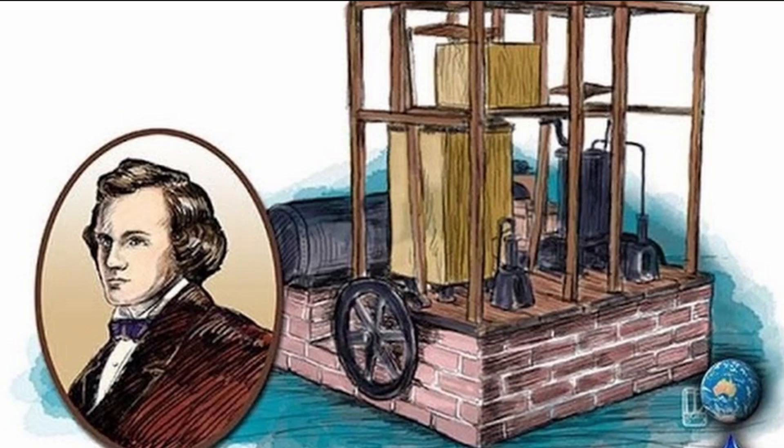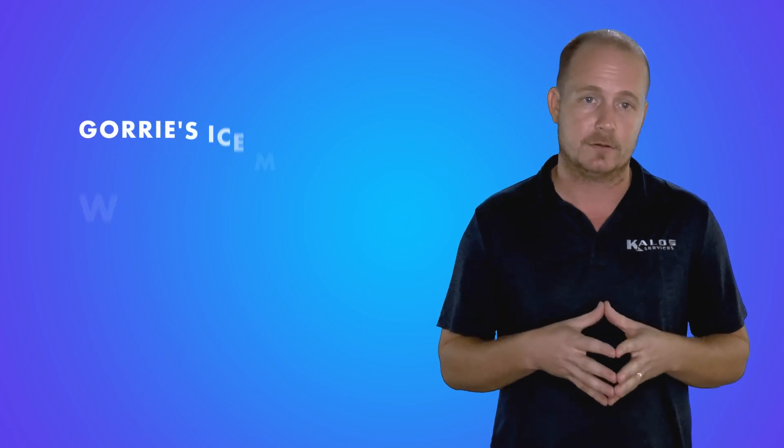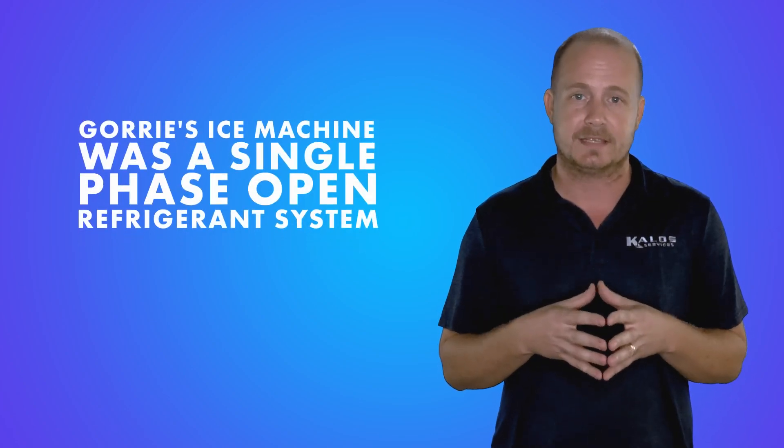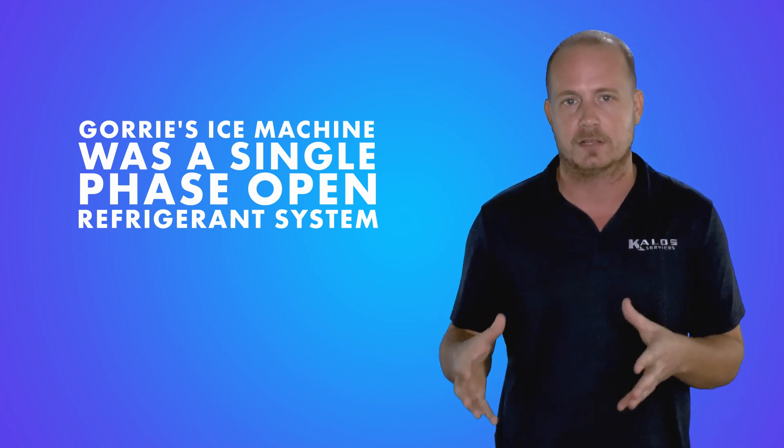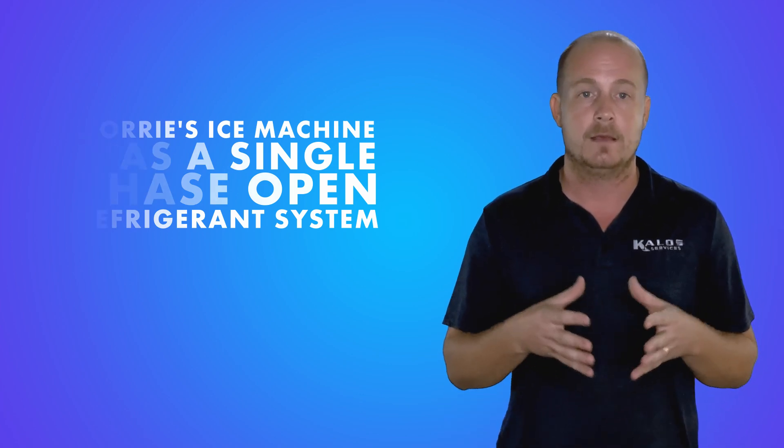Another early type of technology that was still using compression refrigeration but was an open system was John Gorey's original ice machine. What he was doing is he was compressing air and then decompressing air in order to reject heat in and out. He wasn't doing a phase change, so it was only a single phase refrigerant system, but it was still an open system because he wasn't able to get it completely sealed in the systems that we have today. So there was a lot of loss in and out of the system, but because he was using air, it wasn't a concern.